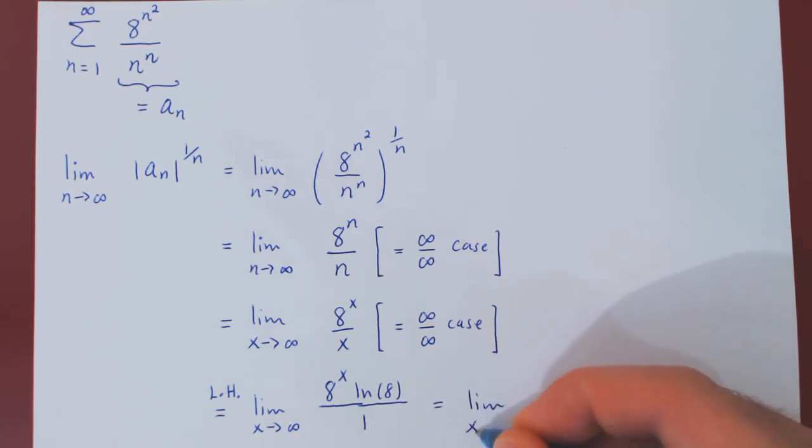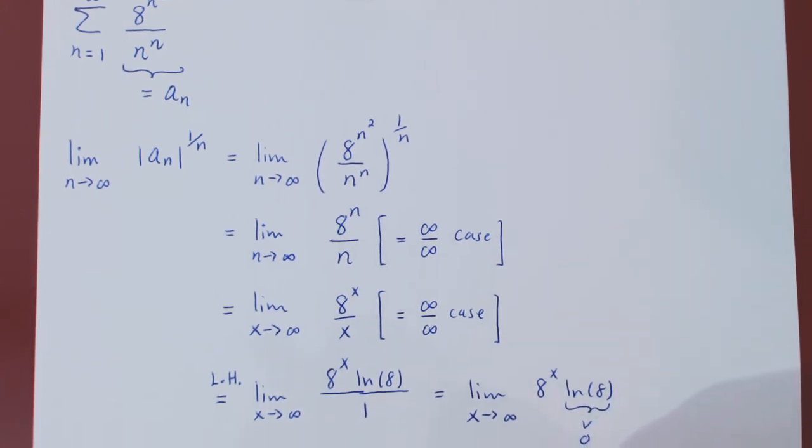And the limit becomes trivial, because we're left with 8 to the x ln of 8. ln of 8 is some positive real number. And as x tends to infinity, 8 to the x tends to infinity. So, the limit is infinite.